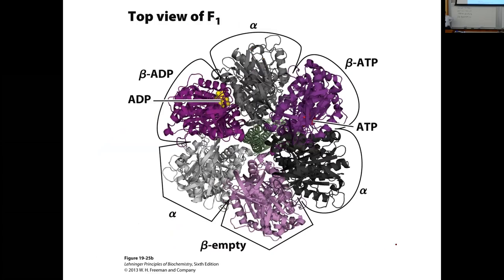This slide shows a top-down view of the F1 subunit. You have interdigitated alpha, beta, alpha, beta, alpha, beta subunits, and in the center is the gamma subunit — slightly tilted — contacting one of the three copies of the beta protein. As the gamma subunit moves, it proceeds from one beta subunit to the next, then to the further beta subunit, and then starts over again, contacting those beta subunits again and again.